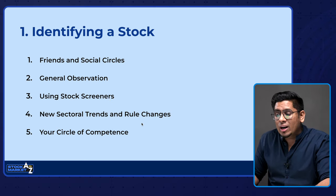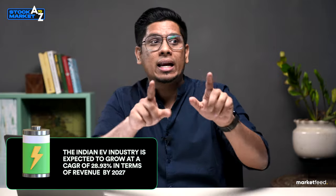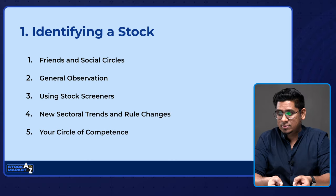Number four is new sectoral trends and regulatory changes. You live in India and you know there are a lot of developments happening, including regulatory changes. A simple example is the sectoral trend of electric vehicles — we clearly know EVs are taking over and will be the future. When you see that sectoral trend, go and see which companies are doing well there, and bring those into your watchlist.